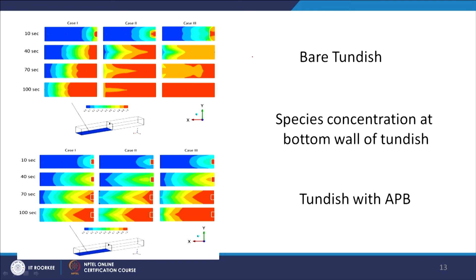Species concentration contours show how concentration increases with time from the inlet. As time progresses, the concentration distribution changes across the tundish. With and without APBs, there is a visible difference in the species concentration observed at the outlet.